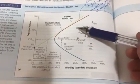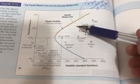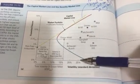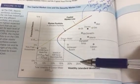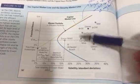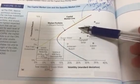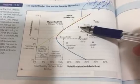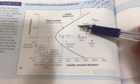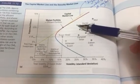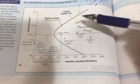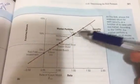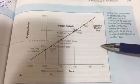Let's take GE as an example. Why is GE not on the market line? Because at roughly 26% volatility, it's giving a return of around 10%. Why is it giving only that return?